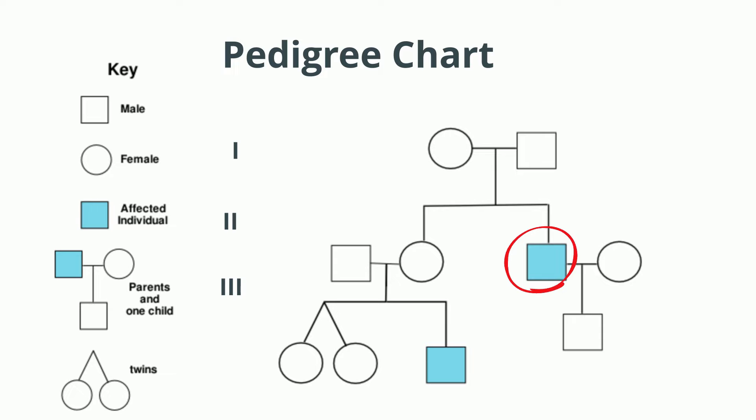In Generation 1, this line between the female and the male is called a marriage line, which basically just tells you they reproduce.